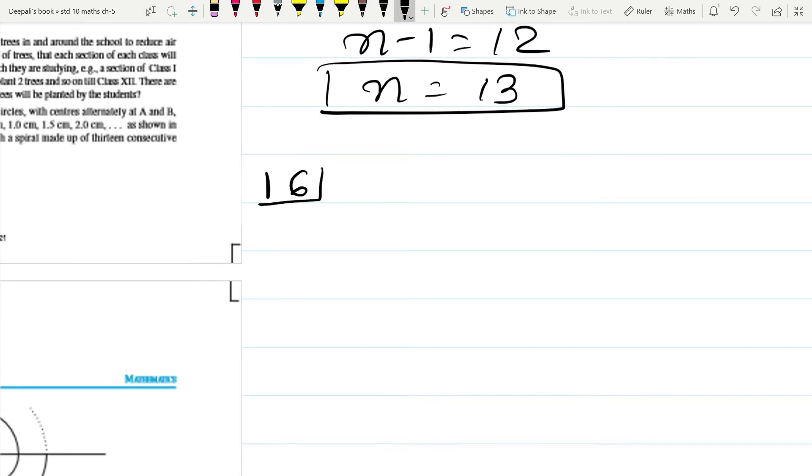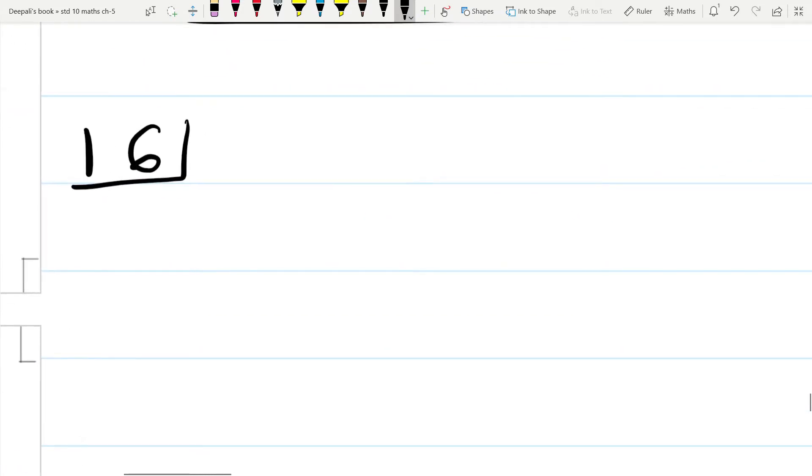Number 16. Determine the AP whose third term is 16 and seventh term exceeds the fifth term by 12.